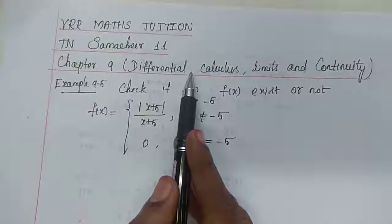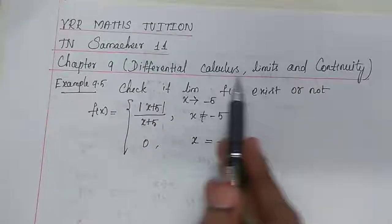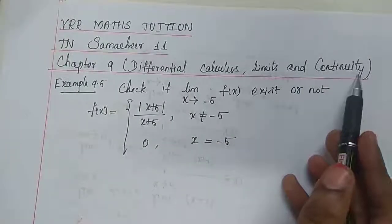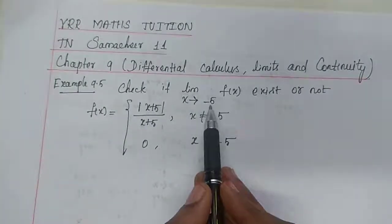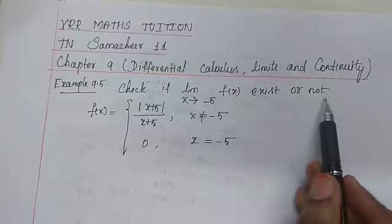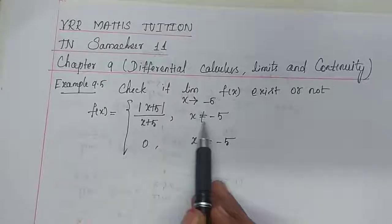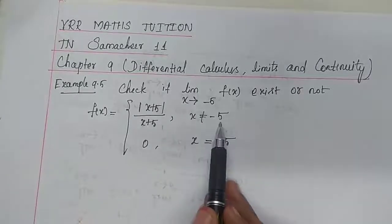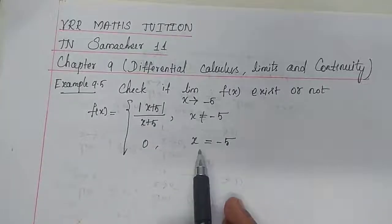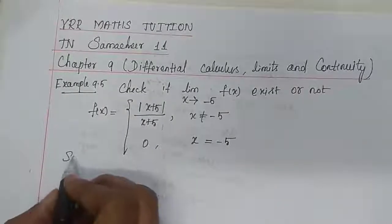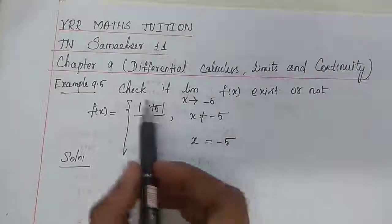Chapter 9: Differential Calculus — Limits and Continuity. Example 9.5: Check if the limit as x tends to minus 5 of f(x) exists or not, where f(x) = |x+5| / (x+5) if x is not equal to minus 5, and f(x) = 0 if x is equal to minus 5.